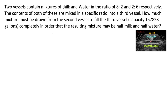Two vessels contain mixtures of milk and water in the ratio 8:2 and 2:6 respectively. The contents of both are mixed in a specific ratio into a third vessel. How much mixture must be drawn from the second vessel to fill the third vessel having capacity 157,828 gallons completely, in order that the resulting mixture may be half milk and half water?